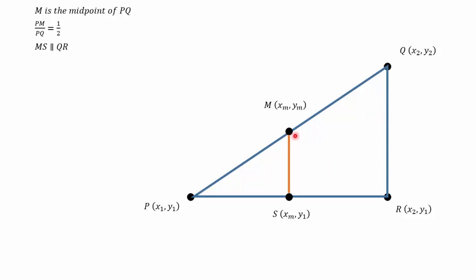And we also know that MS is parallel to QR. So we know that angle P is common to both triangles when we're looking at triangle PMS and PQR. And I know that angle PMS is equal to angle PQR because they are corresponding angles and MS is parallel to QR.